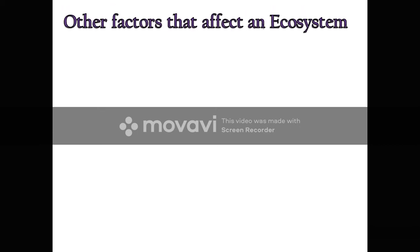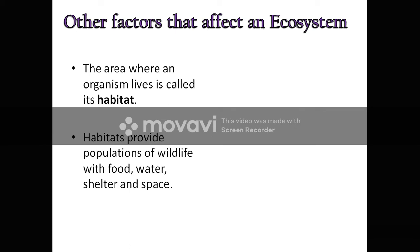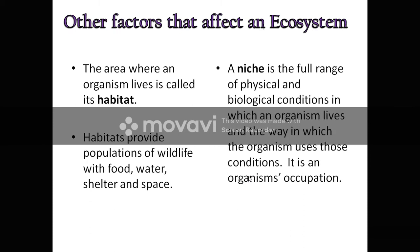Other factors that affect an ecosystem include habitat. The area where an organism lives is called its habitat. Habitat provides a population of wildlife with food, water, shelter and space. A niche is the full range of physical and biological conditions in which an organism lives and the way in which the organism uses those conditions. It is essentially an organism's occupation — the needs of an organism to survive.